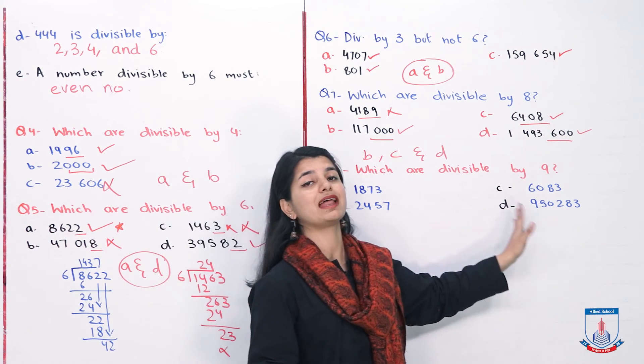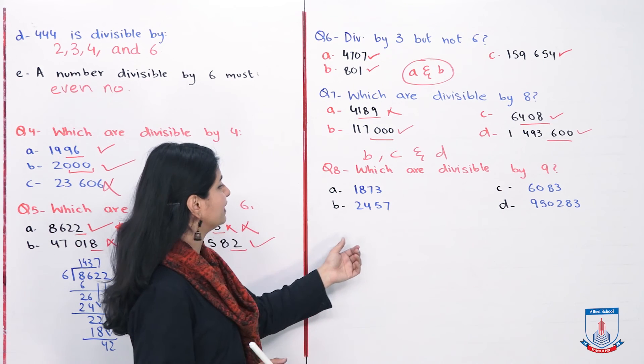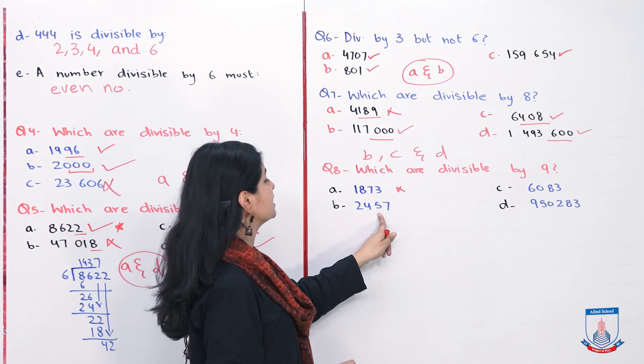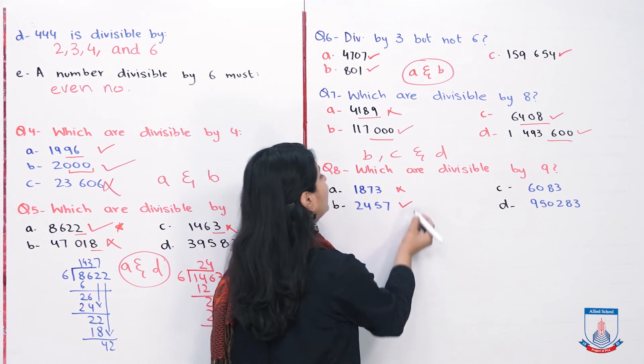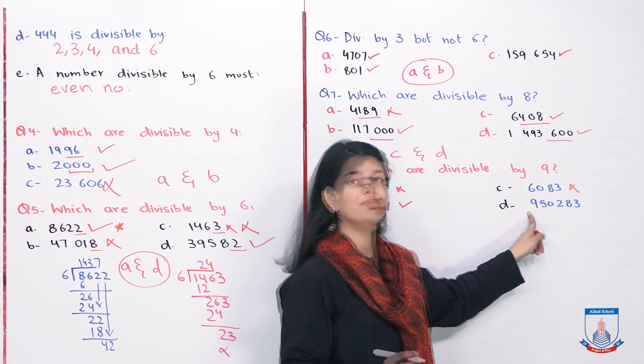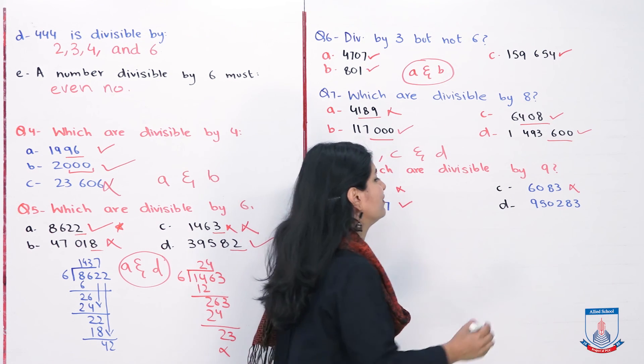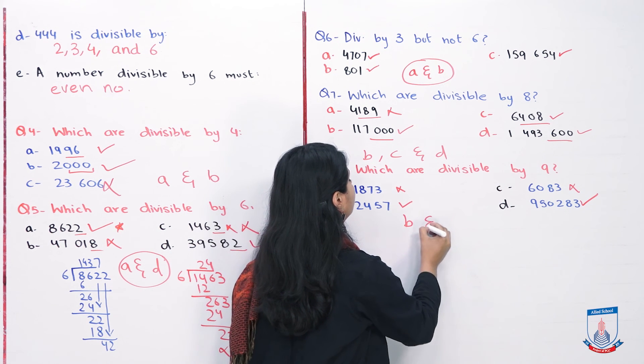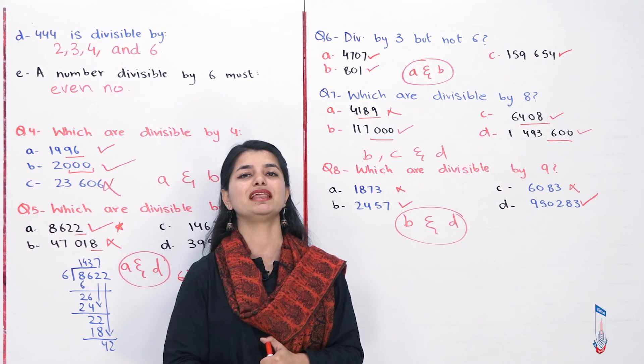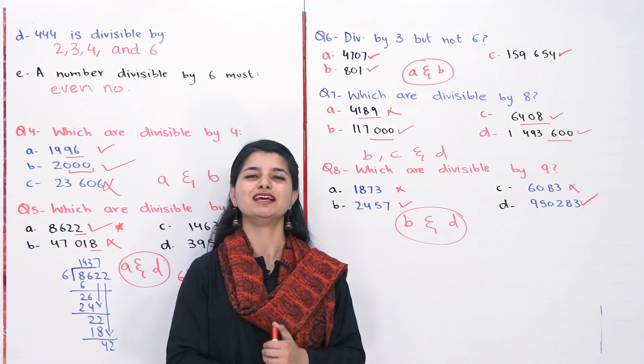Last question: which numbers are divisible by 9? Recall the divisibility rule for 9: the sum of the numbers should be divisible by 9. So we should add them. First, 9+10 is 19, so this option is cancelled. Here we have 4+2 is 6, 6+5 is 11, 11+7 is 18. So this is right. Next we have 8+3 is 11, plus 6 is 17, wrong. And then we have this number: 9+4 is 13, plus 2 is 16, 16+8 is 24, 24+3 is 27. Hence this is also divisible by 9. So B and D are our answers. So students, with this Exercise 2a is complete. In the next lecture we'll meet learning about HCF and LCM, and I am sure that you will have a lot of fun learning these new concepts. See you in the next lecture. Allah Hafiz.